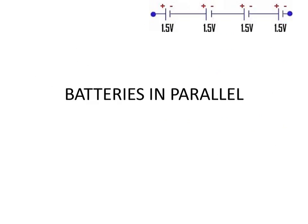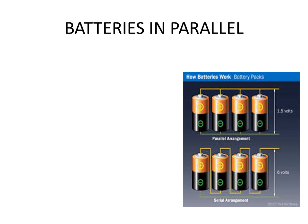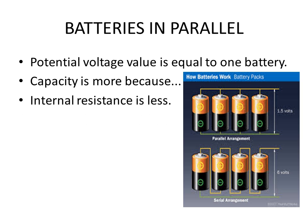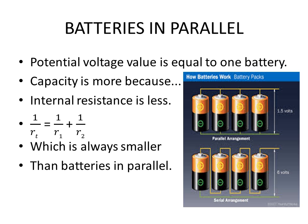What happens to batteries in parallel? The potential voltage value is equal to one of the batteries. The capacity is more because the internal resistance is less. Considering the following formula which works the same as resistances in parallel, which then will also be smaller than the smallest resistance of one of the batteries in parallel.